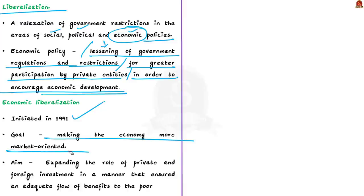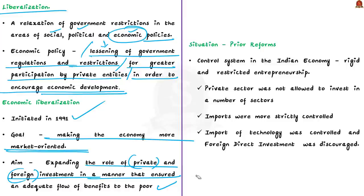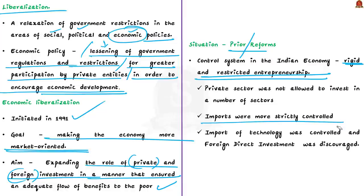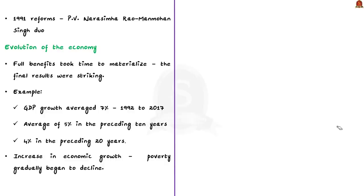The aim was to expand the role of private and foreign investment in a manner that ensured adequate benefits to the poverty-stricken group. Before the reforms, the control system in the Indian economy was very rigid and restricted entrepreneurship — the private sector was not allowed to invest in many sectors, and even where allowed, it could invest only after getting an industrial license. Imports were more strictly controlled to conserve limited foreign exchange reserves, the import of technology was controlled, and FDI was discouraged. India also faced a BOP crisis in 1990, which led to the drastic reforms.